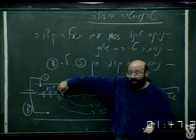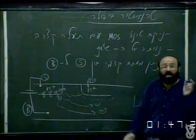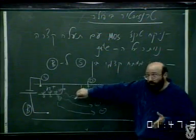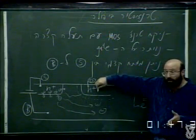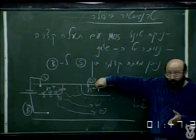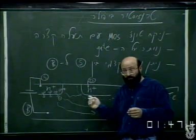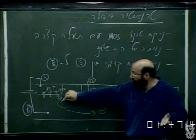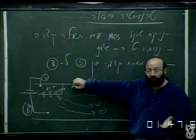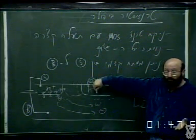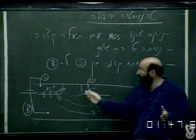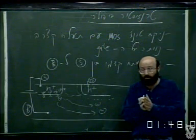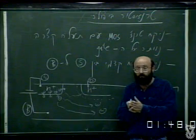יש דיודה אחת שמזריקה ושנייה שאוספת, וכל הרעיון זה שהן קרובות אחת ליד השנייה, והמוזרקים יכולים לעשות דיפוזיה ולהגיע בשלום אל הדיודה האוספת. אילו הדיודות האלה היו מרוחקות אחת מהשנייה, הייתה דיודה אחת שמזריקה, המוזרקים היו עושים פה דיפוזיה ורקומבינציה, ולאזור האיסוף לא היו מגיעים. אבל אם עושים את המרחק בין הסורס והדריין קצר ביחס למרחק דיפוזיה, יש אינטראקציה כזאת - וזהו הטרנזיסטור.